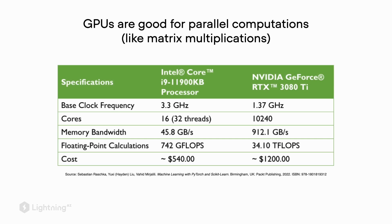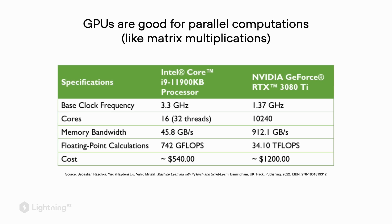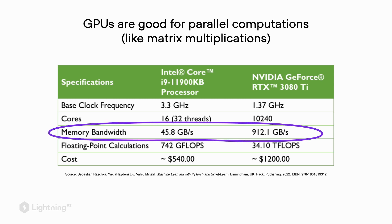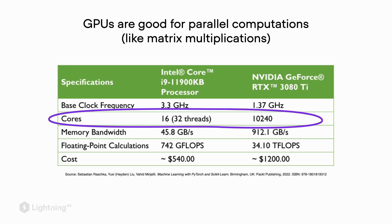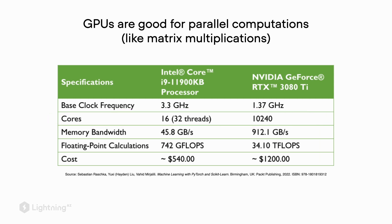GPUs can accelerate computation of, say, matrix multiplications. The main reasons why GPUs are faster than CPUs for certain operations like matrix multiplications is that GPUs have more memory bandwidth and more computing cores. So if we have computations like matrix multiplications that benefit from parallel processing, GPUs are usually better for that.